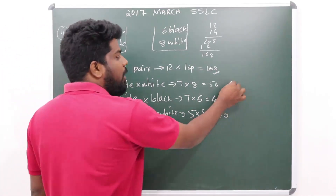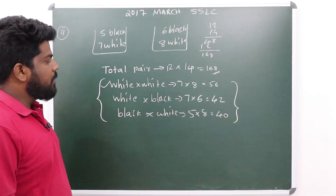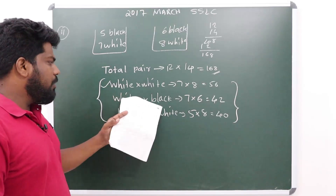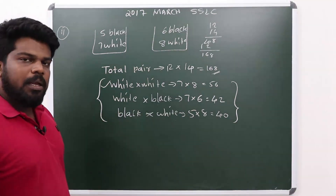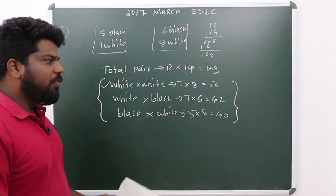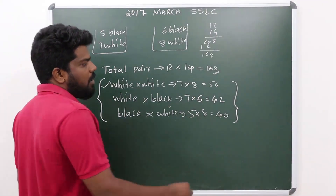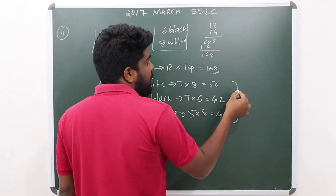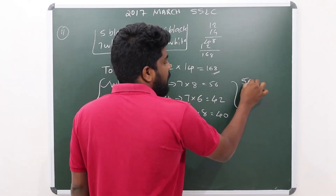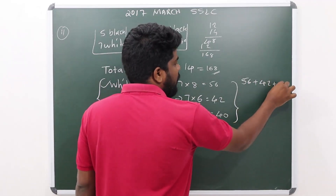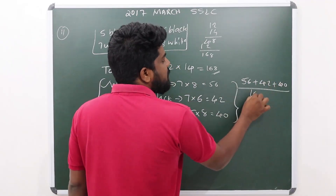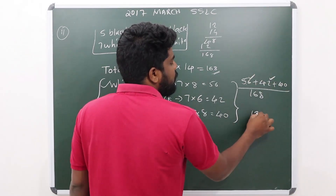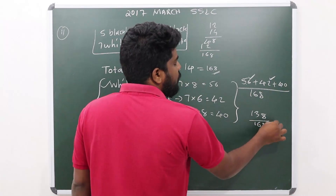At least one white bead is equal to the sum of favorable outcomes: one white and one black, plus other cases. At least one white equals 56 plus 42 plus 40, divided by 168. Therefore, at least one white equals 98 by 168.